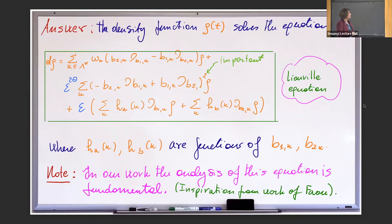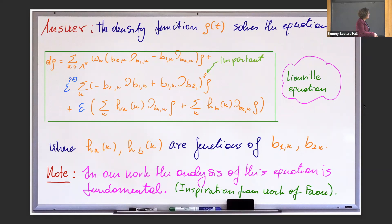We deduce from the equation what is the equation that the evolution of rho satisfies. This is called a Liouville equation, but some people call it a Fokker-Planck equation. The important thing I want to remark is: this is a square here — this is taking the square of this operator — and it's in the right sign, so it's going to smooth things out. The idea of looking at the evolution of the density function was inspired by the work of Vu, who obtained some nice properties for that.